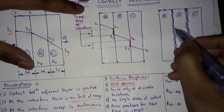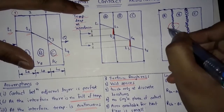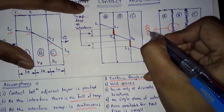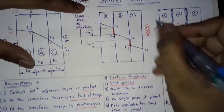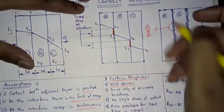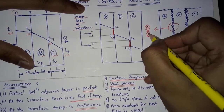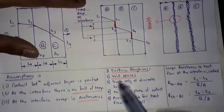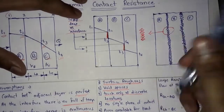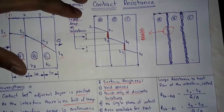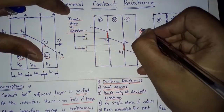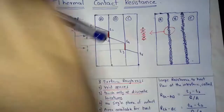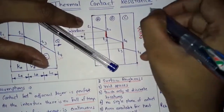Due to this surface roughness, there are void spaces which are occupied by air. As you can see here, these are the void spaces. The surfaces touch only at discrete locations — at this point, this point, this point, and this point.